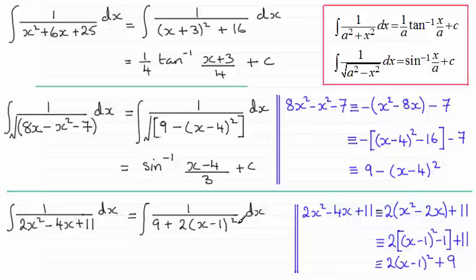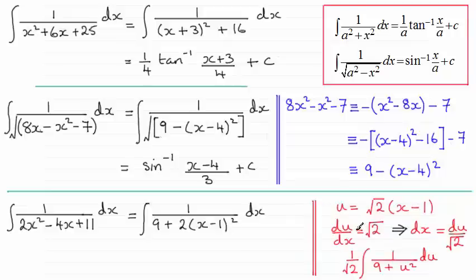The substitution would be u = √2(x-1). And if you do that, then you can see that du/dx would equal √2, so dx would be du/√2. And so this integral here would reduce down to 1/√2 integral of 1/(9+u²) integrated with respect to u.